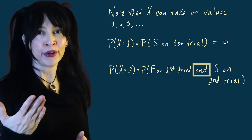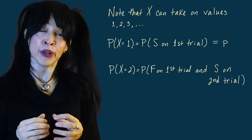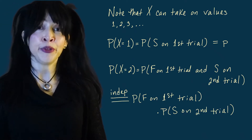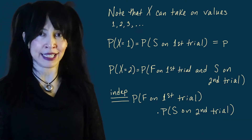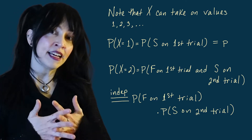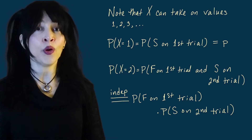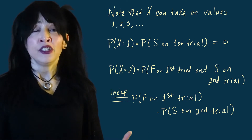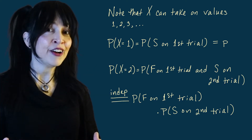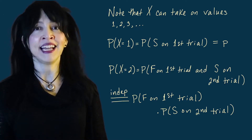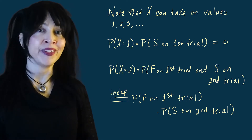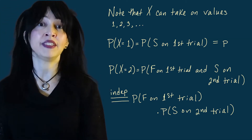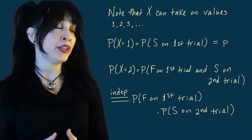This 'and' is like an intersection. From earlier videos, the probability of A intersect B can be written as the product of the two probabilities if A and B are independent. So by independence we get to break this up. The probability of getting a success is always p for every trial, which means the probability of failure is always one minus p for every trial. So the probability that X equals two is one minus p times p. You might question this model for shooting baskets since p may change with practice or fatigue, but it is a model with simplifying assumptions.